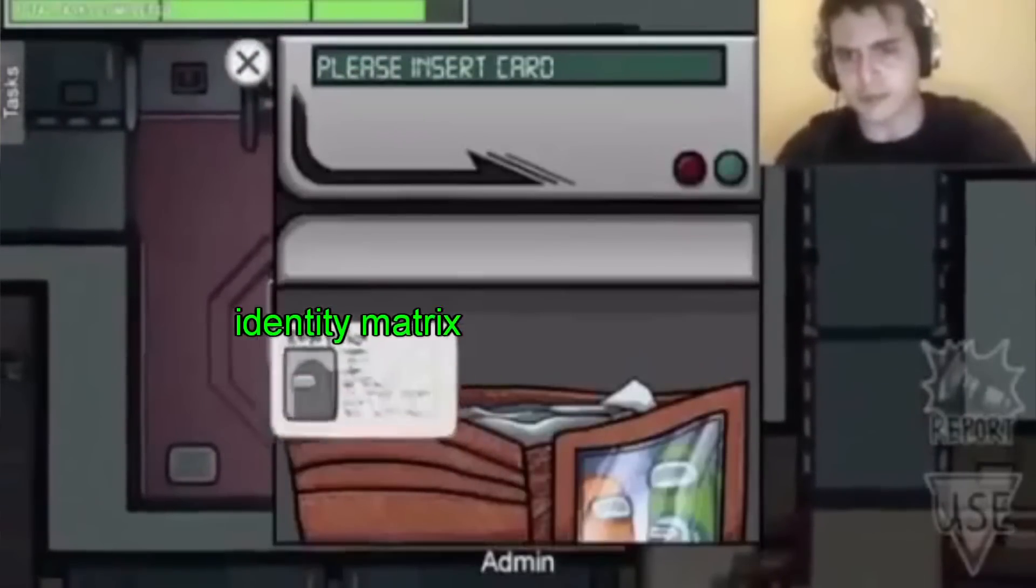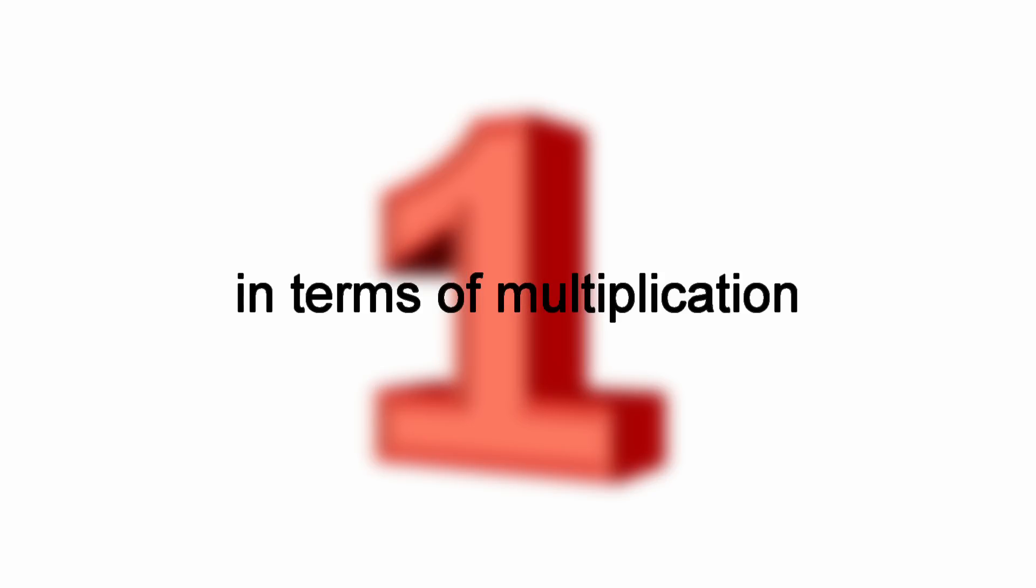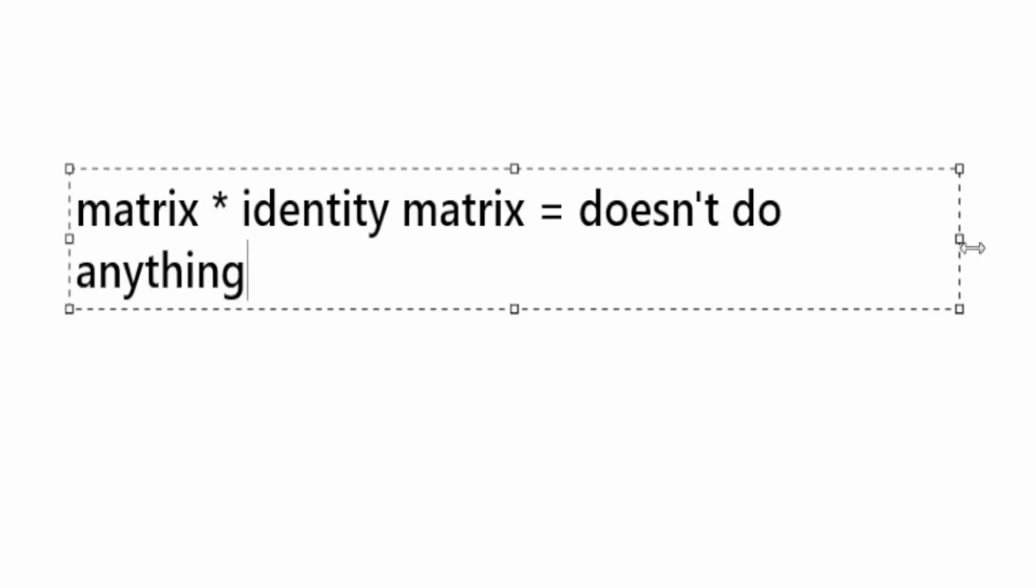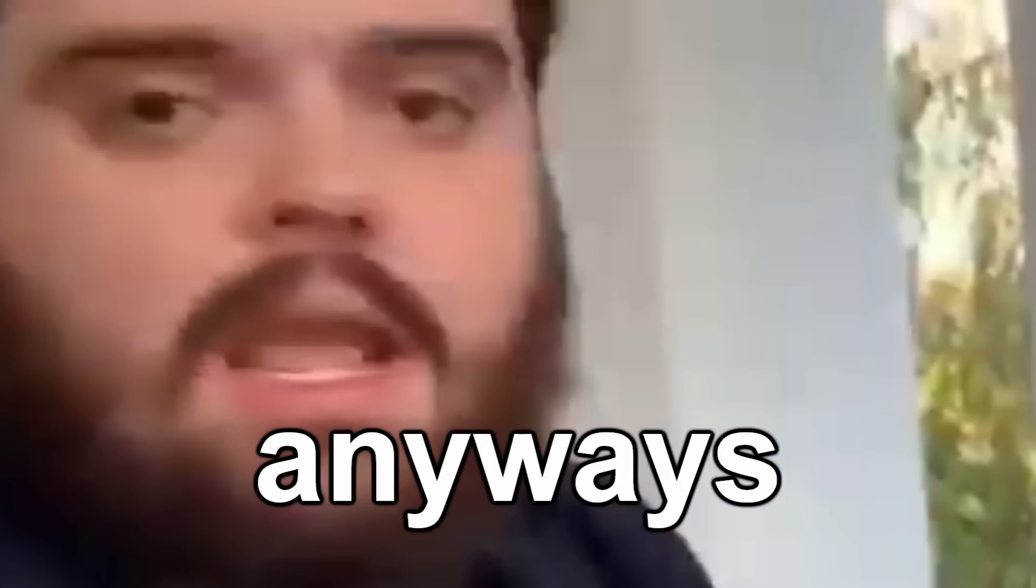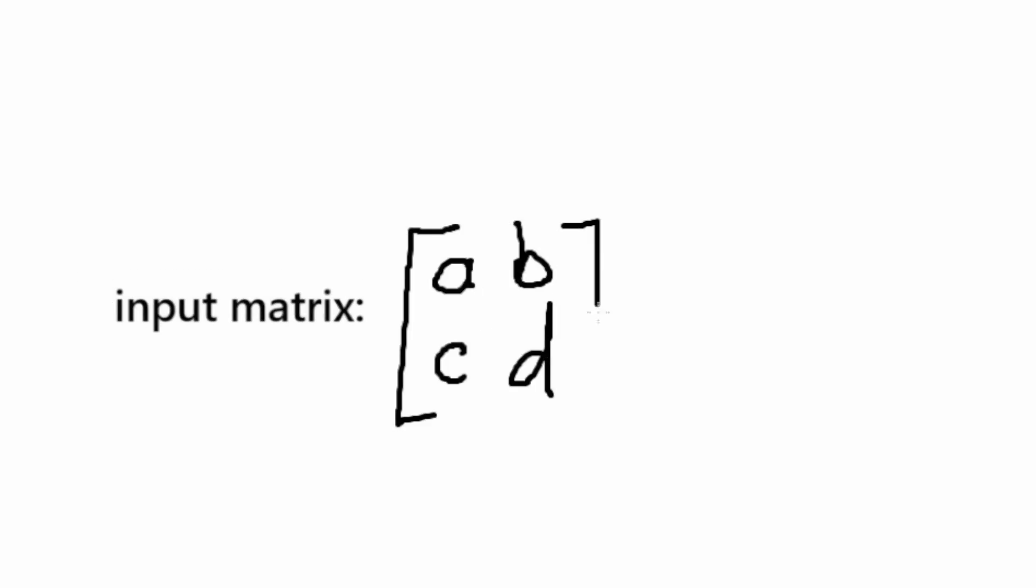An identity matrix is basically like the number one in terms of multiplication. It doesn't do anything when you multiply, and therefore it's completely useless. That's fantastic, but we're here to learn about it anyways.